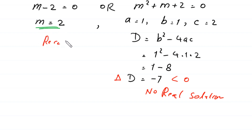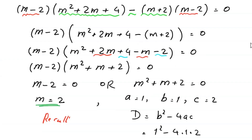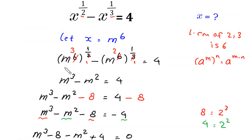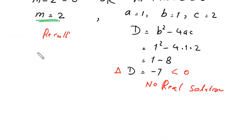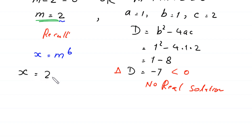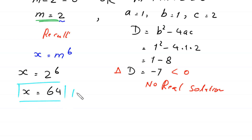Now, recall that we supposed x is equal to m to the power 6. To find the value of x, we put m equals 2, so the equation becomes x is equal to 2 to the power 6, and x equals 64. So this is the final answer of this equation.